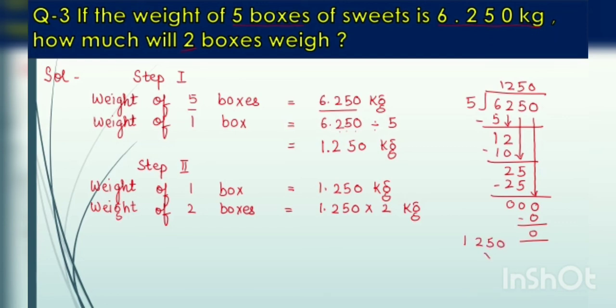After doing the multiplication you can get the answer 2.500 kg, but it is incomplete because you have not put the decimal. After putting the decimal, the number that you have got is the answer. So the weight of 2 boxes is 2.500 kg.